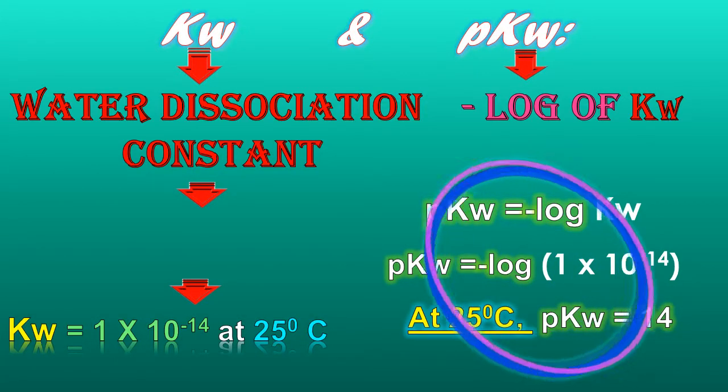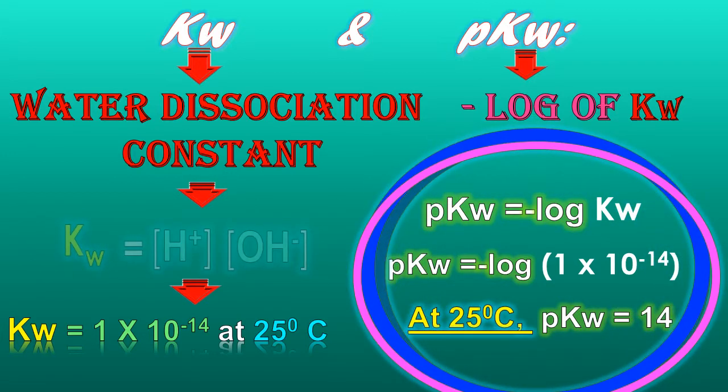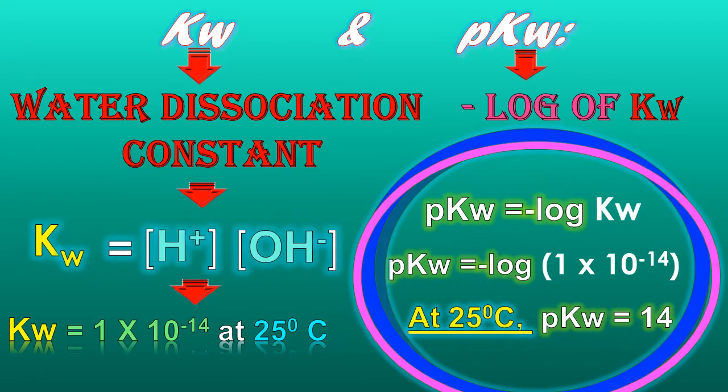So, what is the difference between KW and PKW? Friends, simply the water dissociation constant is represented by KW, whereas the negative log of the water dissociation constant is represented by PKW. Here the P represents the negative log.